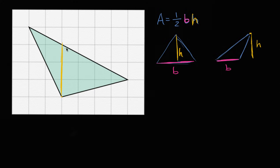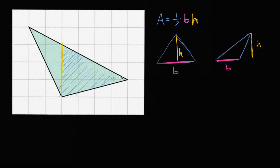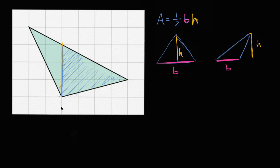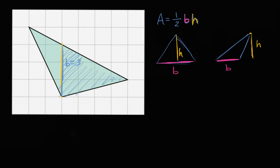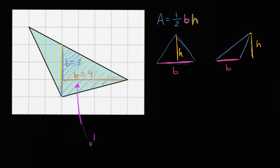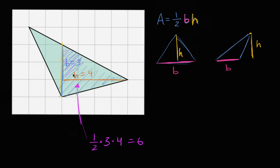This triangle over here, shaded in blue — if you view this yellow line as the base of this triangle, the base is three units. And the height here is four. So the area of that triangle is one half times three times four, which is equal to six.